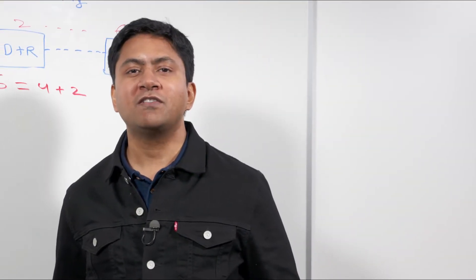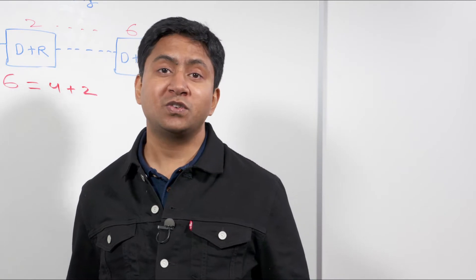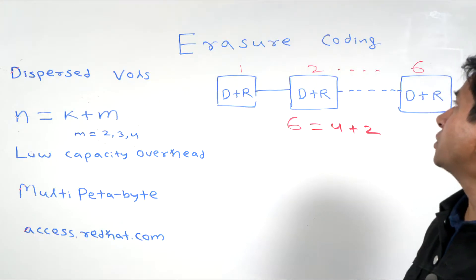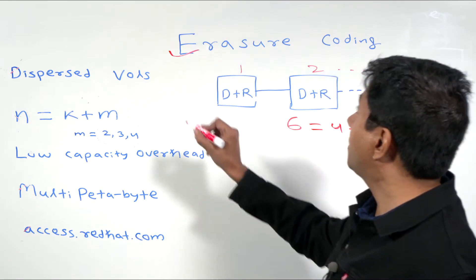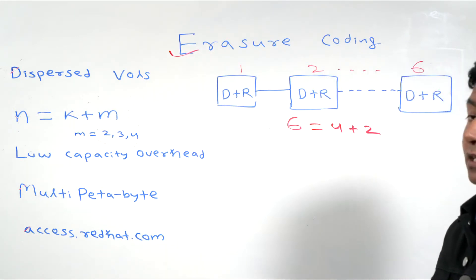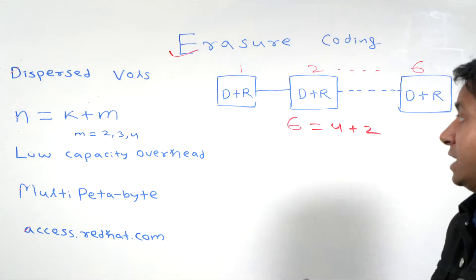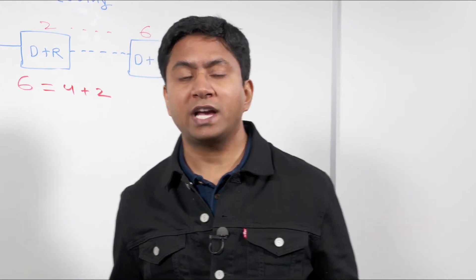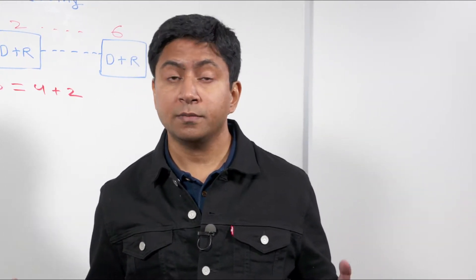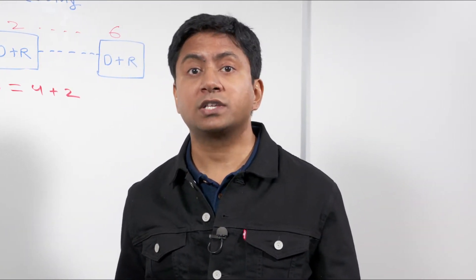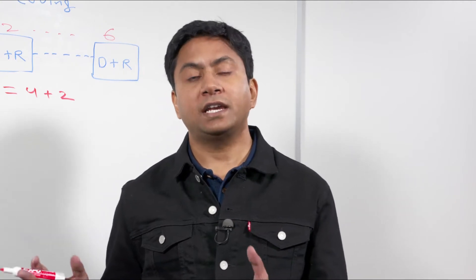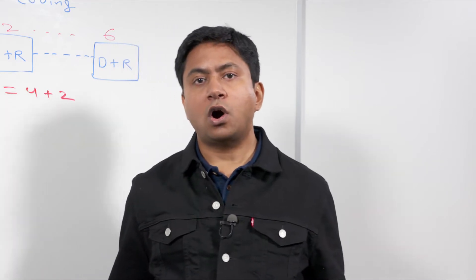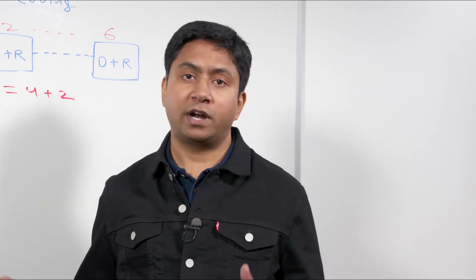Hey everyone, I'm Alok Srivastav. I work with Red Hat Storage Business Unit as a technical product manager. Let's spend some time talking about erasure coding, how it is implemented in Gluster, what it does, and what are the benefits. Erasure coding is a method of data protection in which data is broken into chunks. It gets expanded and encoded with redundant pieces of information and gets stored on a set of different bricks.